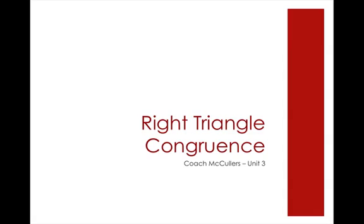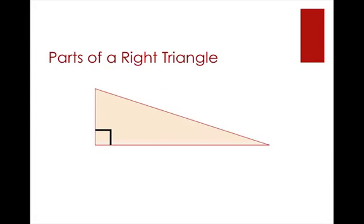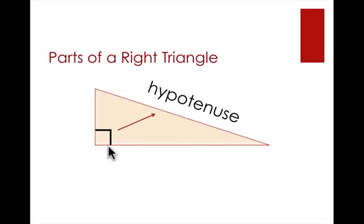These congruence theorems apply specifically to right triangles. The SAS, ASA, SSS, and AAS congruence theorems apply to all triangles, but these four I'm about to give you only apply to right triangles — triangles that have a right angle. Before we start, you need to know the parts of a right triangle. Across from the right angle is the hypotenuse, which is always the longest side. The other two sides are called legs. The legs make up the right angle, and the hypotenuse is across from it.